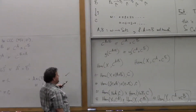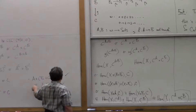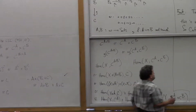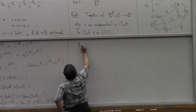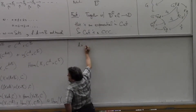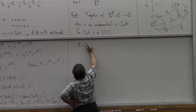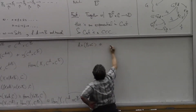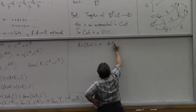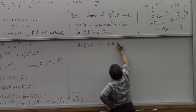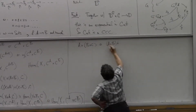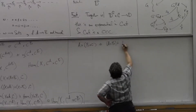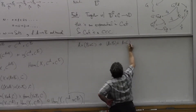Let's do one more, because then I will cash this check. So I want to show that A cross B plus C is isomorphic to A cross B plus A cross C. So it's the distributive law.